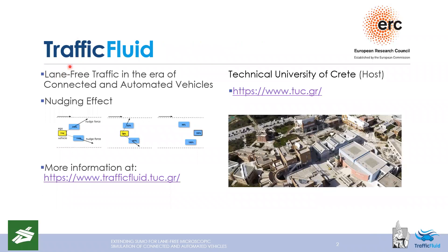TrafficFluid is a research project which targets two core principles. The first one is lane-free traffic, in the sense that vehicles no longer adhere to specific lane placement and observe the two-dimensional road — both the longitudinal and lateral axis. The second one is the nudging effect, which can be thought of as front vehicles being pushed by ones behind that want to overtake, so that they are accommodated. More information about TrafficFluid is available at the provided website.